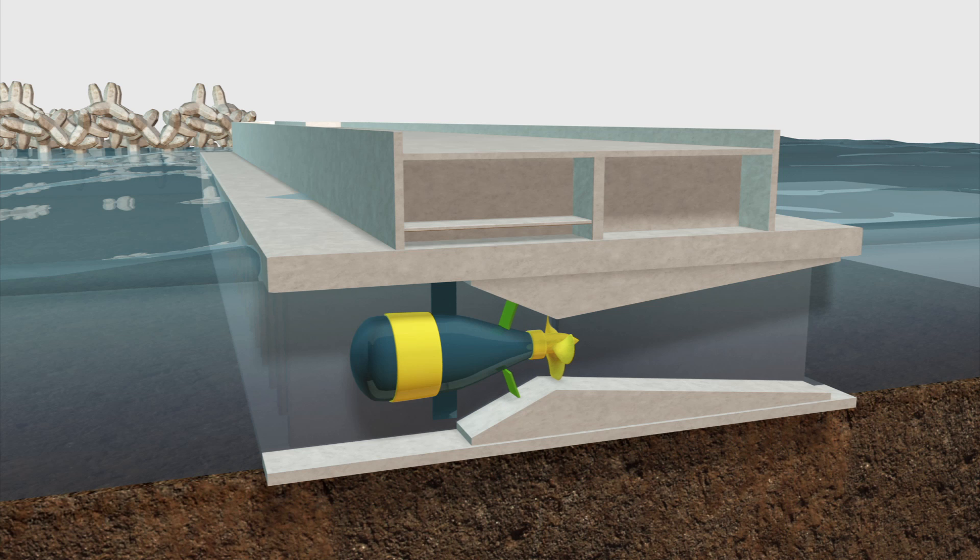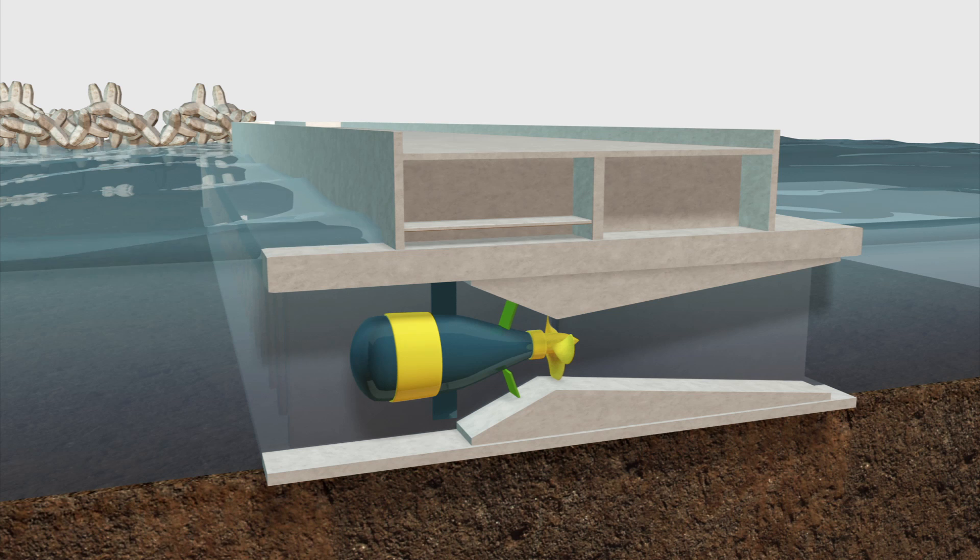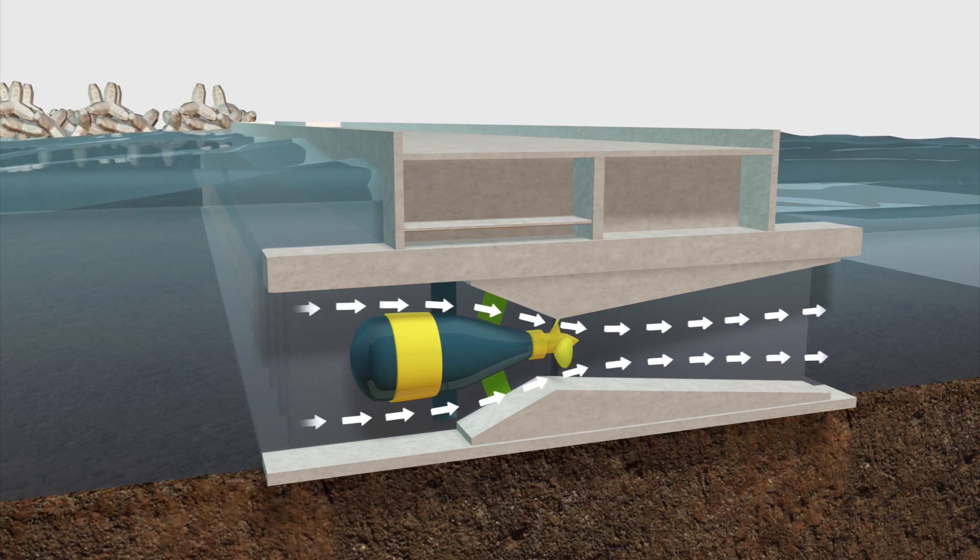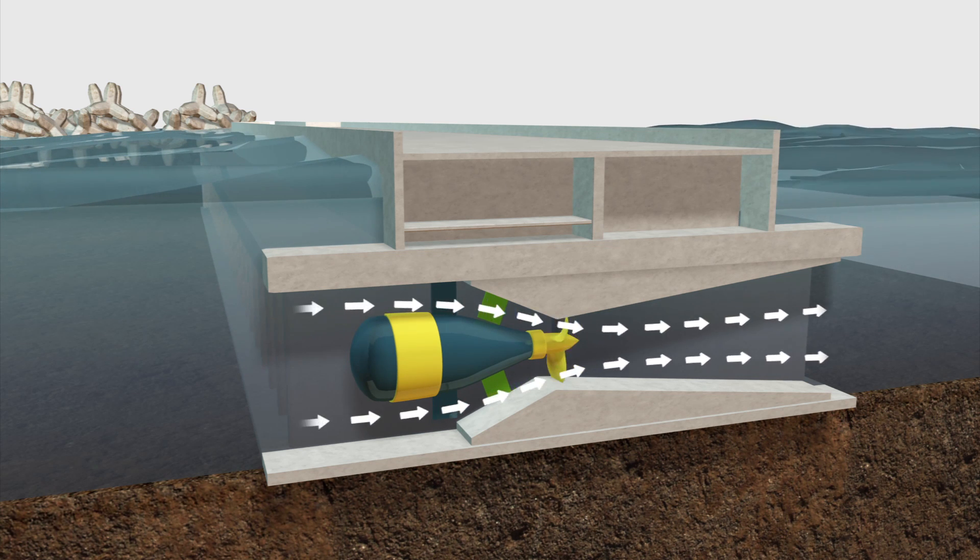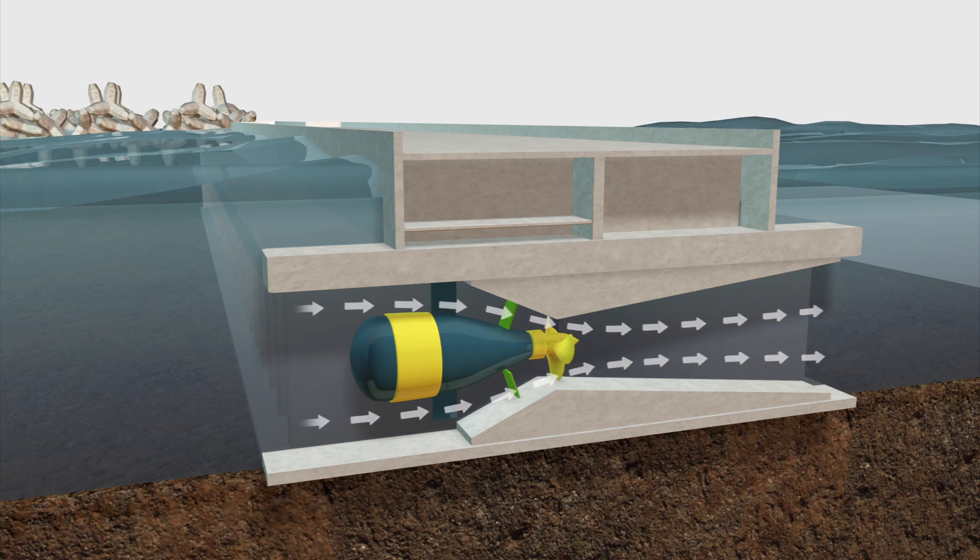The turbine's sluice gates will be closed until the water level outside the lagoon is high enough. It will then open to let the water flow into the lagoon through the turbines to generate electricity.